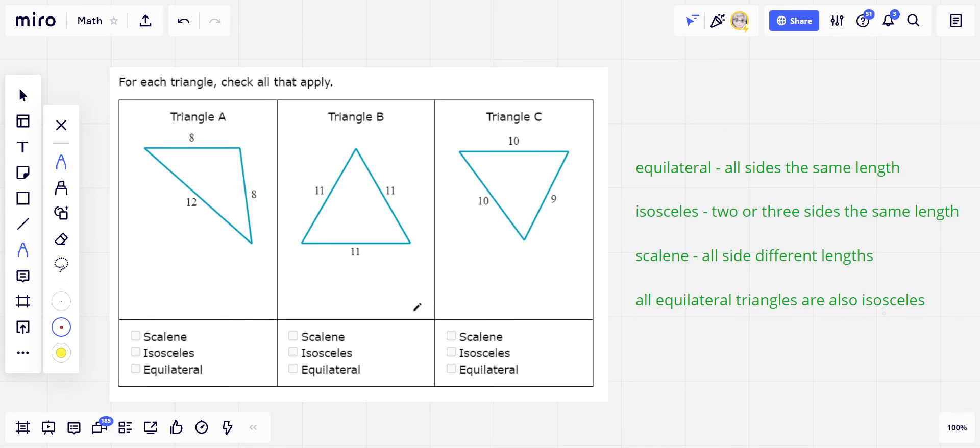There are lots of different ways to classify triangles. We've already seen that you can classify them by their angles. So you can have acute triangles, obtuse triangles, and right triangles. Another way is to classify them by their side lengths.